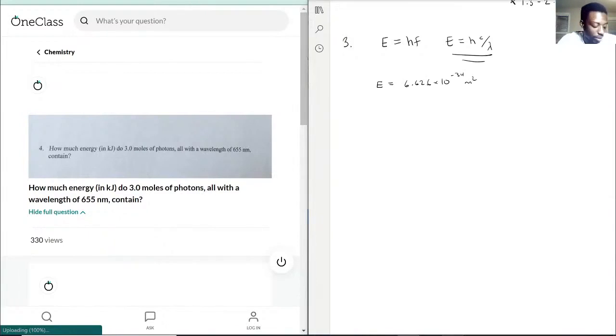And the units are meter squared kilograms per second. And you're going to multiply that by the C, speed of light, 3.00 times 10 to the 8, and you're going to divide that by the wavelength.